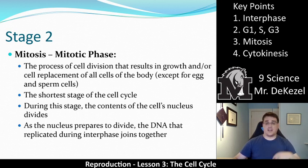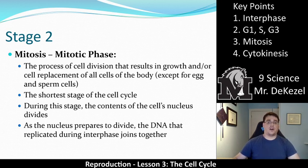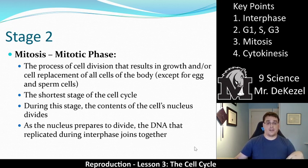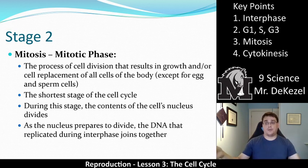Mitosis is the shortest stage of the cell cycle — kind of like your birthday week out of the whole year. It's exciting but fairly short. During this stage, the contents of the cell's nucleus divides — that's the DNA. The DNA was replicated in the S phase and it divides during the mitotic phase into two equal, separate parts. As the nucleus prepares to divide, the DNA that was replicated during interphase joins together, kind of meets in the middle, and then gets pulled apart into two separate portions.